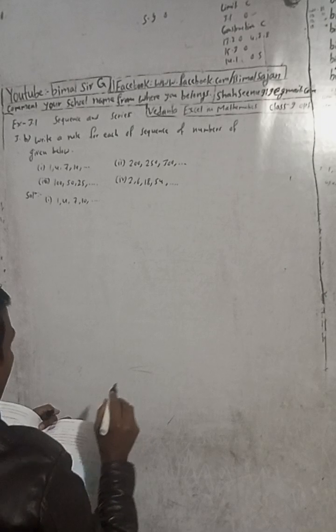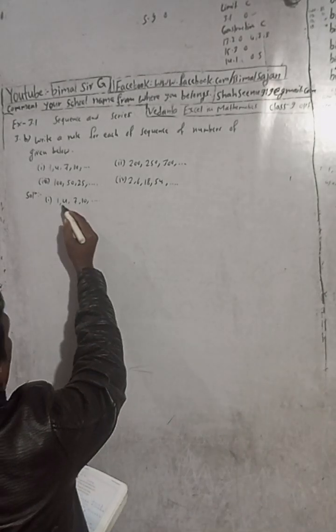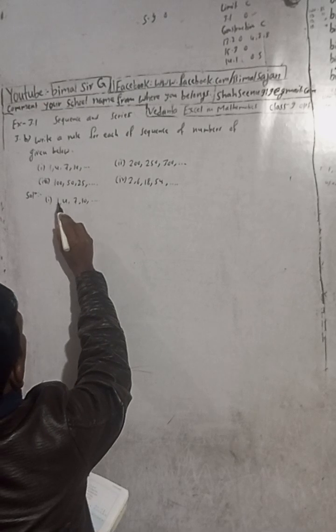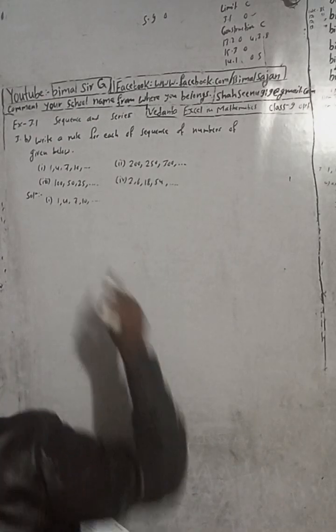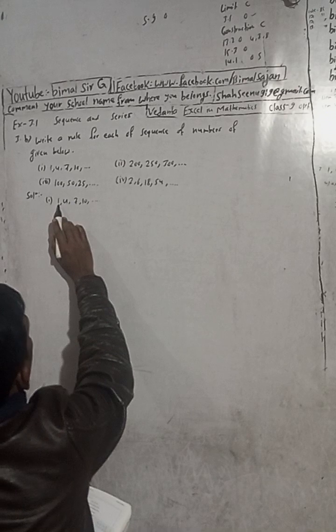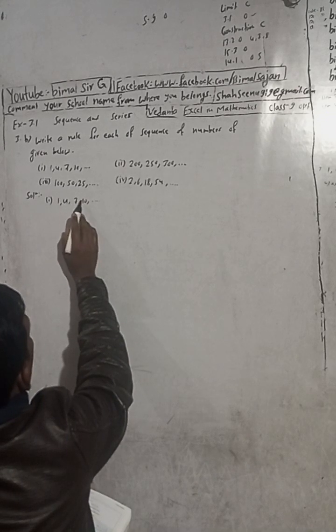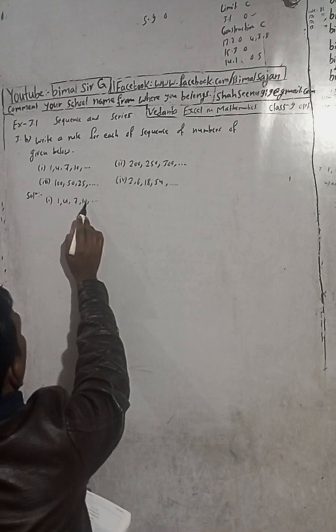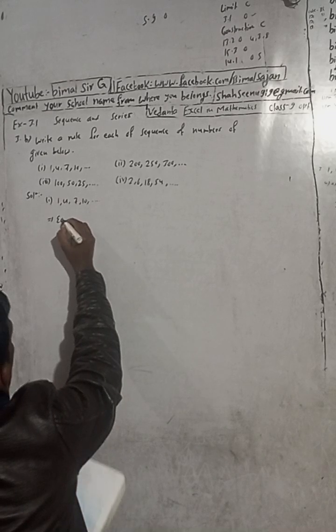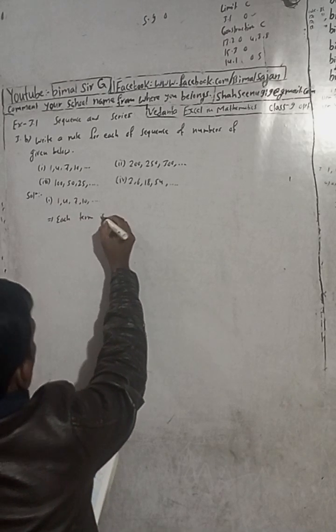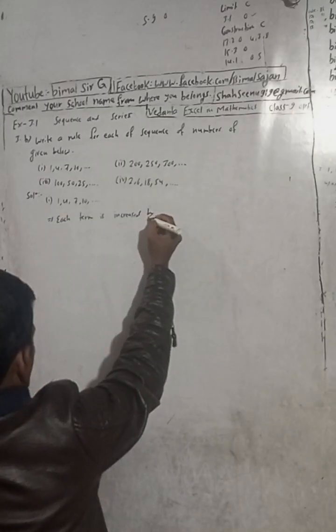Write a rule means: what rule should we write here? Looking at the sequence 1, 4, 7 — what is the difference? If I add 3: 1 plus 3 equals 4, 4 plus 3 equals 7, and 7 plus 3 equals 10. So in each term, 3 is added. The rule is: each term is the preceding term increased by 3.